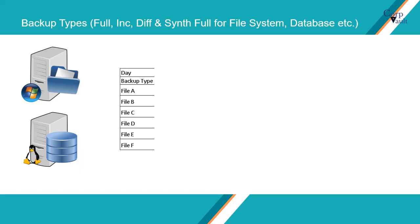Ideally, backup does not see a file by its type. It only sees it as a file — in other words, as a flat file — and performs backup. In our example, we have six files from A to F.